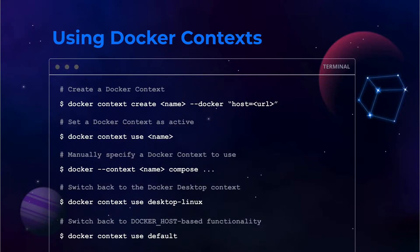After that, all of the various Docker clients, at least the ones that understand contexts, are going to use that context by default. You can also specify the context to use on a per-command basis with the context flag, which is a little bit cumbersome, but at least all you have to specify is a single name and not all of the more complex connection information strings. And then once you're done, you can switch back to the Docker Desktop context, which is a built-in context called desktop-linux, or switch back to the default context, which basically uses the standard legacy Docker host behavior.